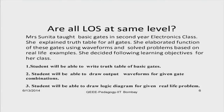One faculty member teaching a second-year electronic circuit class wanted to teach basic gates. She explained gates using truth tables, then drew waveforms to elaborate how each gate performs and how you achieve output waveforms. Further, she tried to solve a few problems based on real-life examples and how to implement gates. Her learning objectives were: students will be able to write a truth table for a basic gate; draw output waveform when gate combinations are given; and draw a logic diagram when a real-life problem is given.